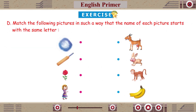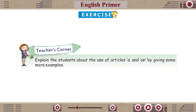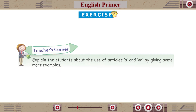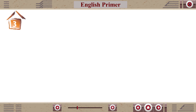Exercise D: Match the following pictures so that the name of each picture starts with the same letter. Exercise E: Use the code to color the picture. Teacher's Corner: Explain to students the use of articles A and AN by giving some more examples.